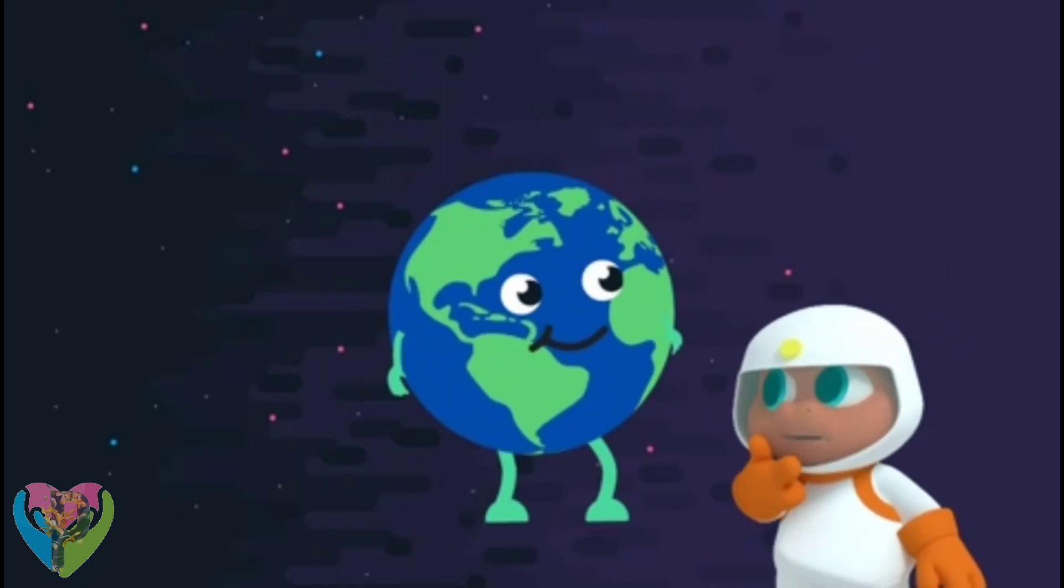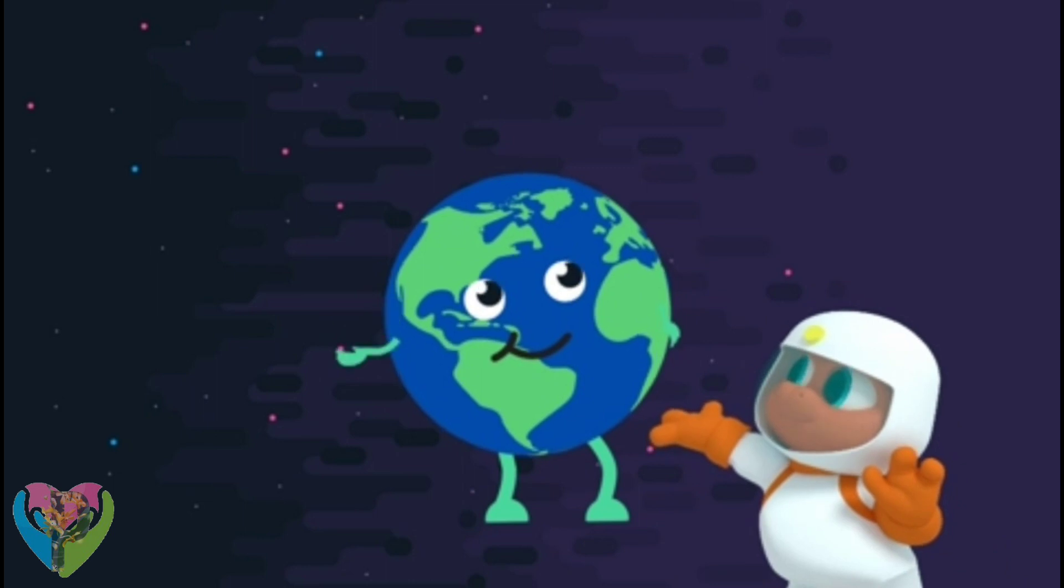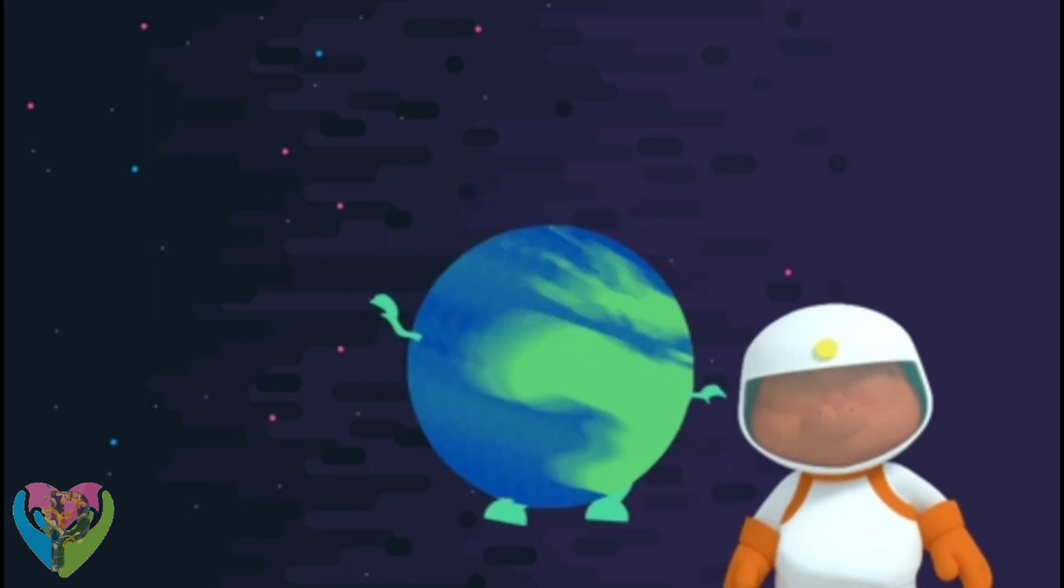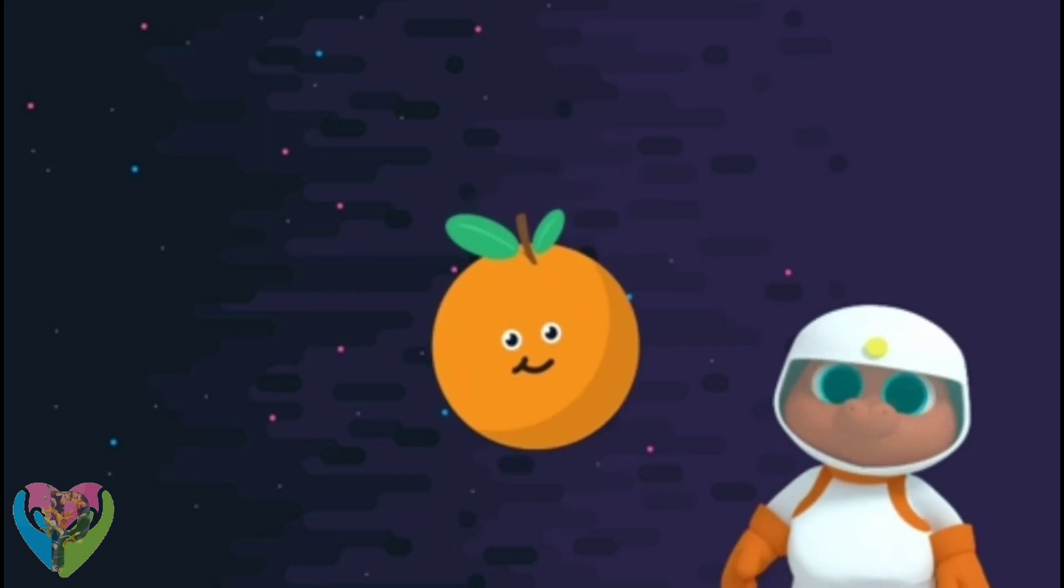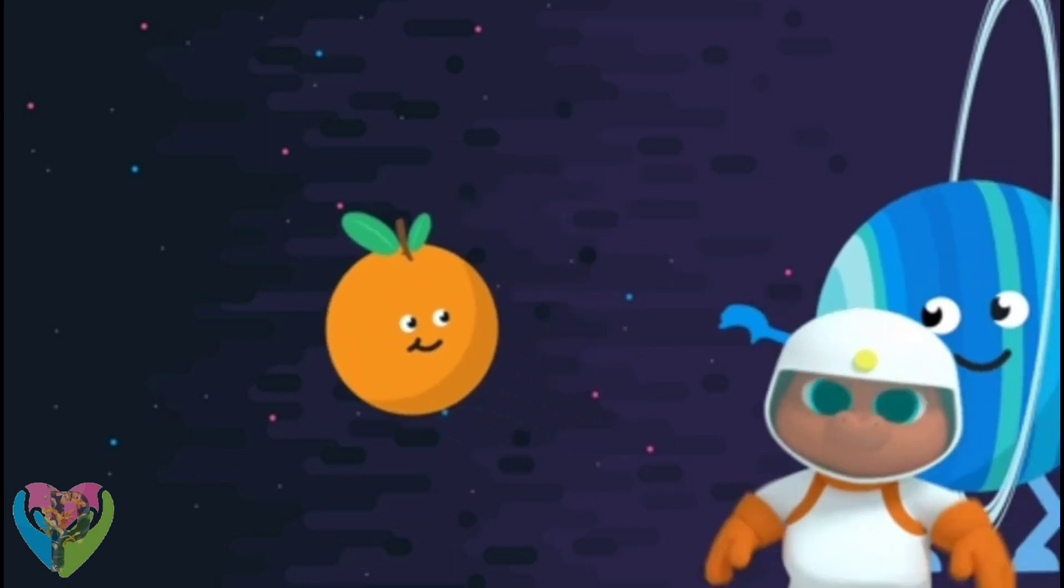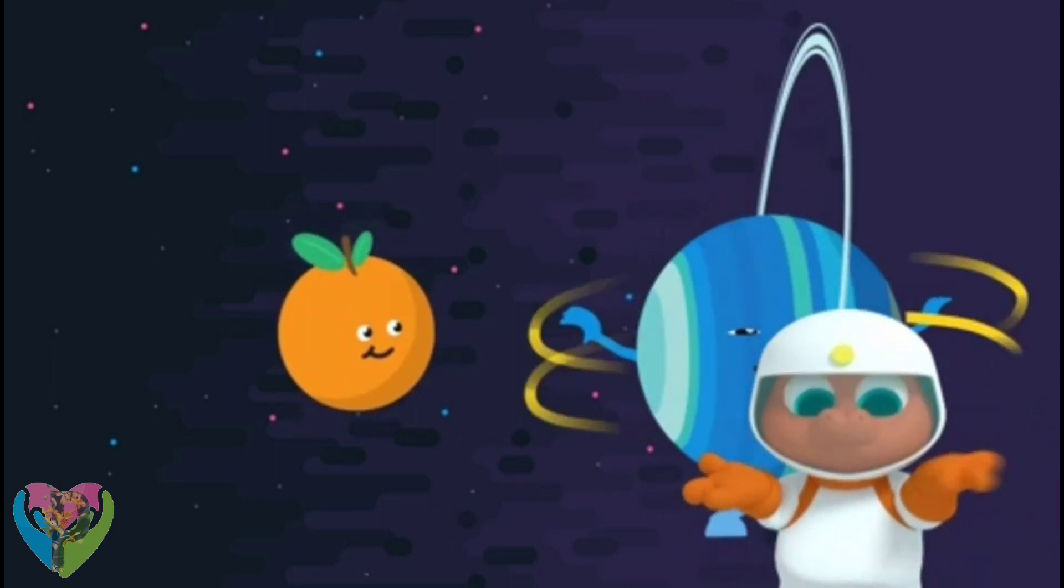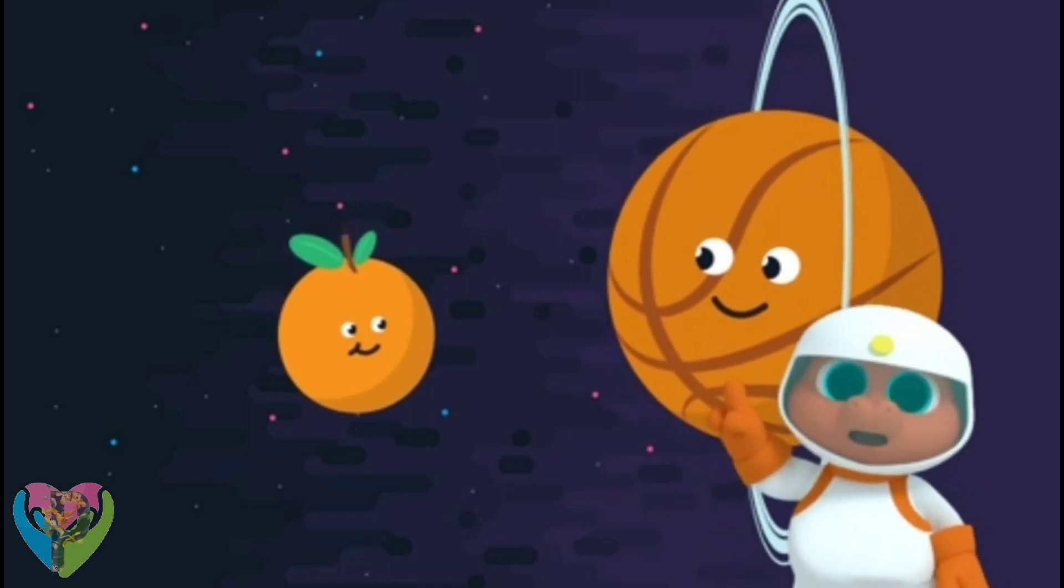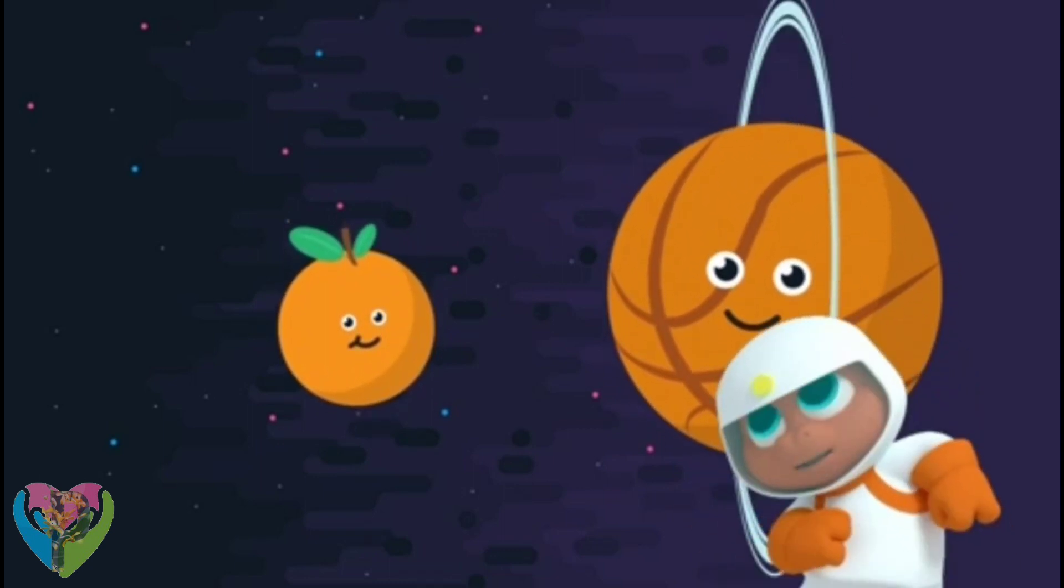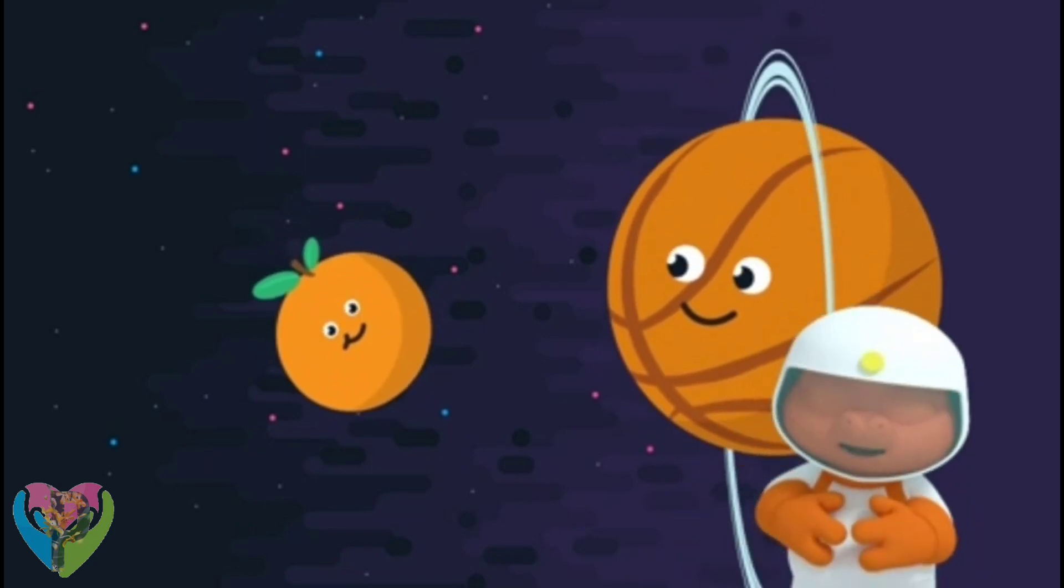If Uranus is an ice giant, does that mean it's bigger than Earth? Uranus is four times the size of Earth. So, if the Earth was the size of an orange, Uranus would be the size of a... Hmm... Basketball! That's a good way to imagine it, Gorby. I've got an idea! If I lean over, then Uranus looks upright!